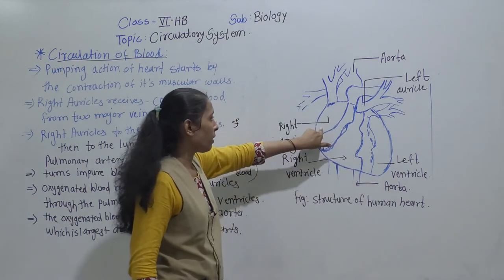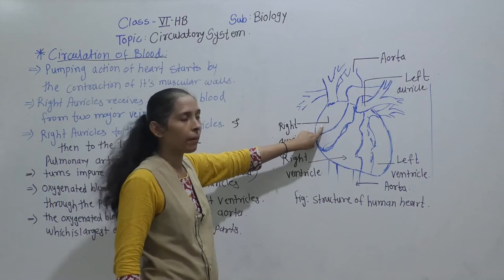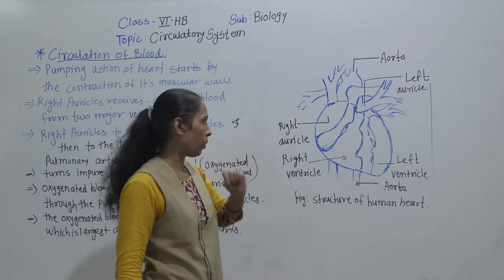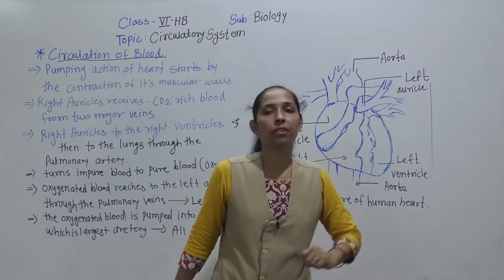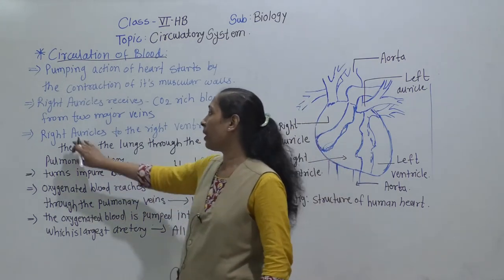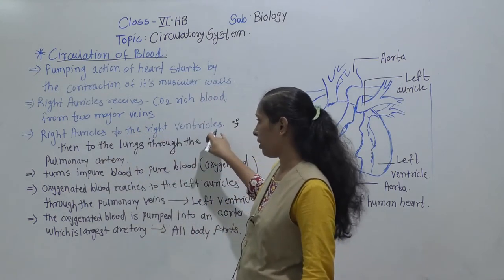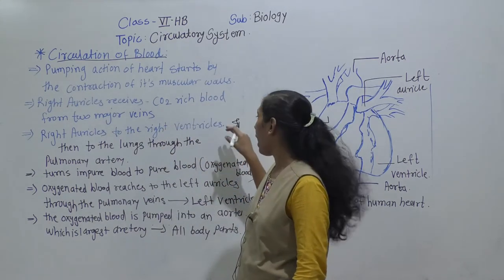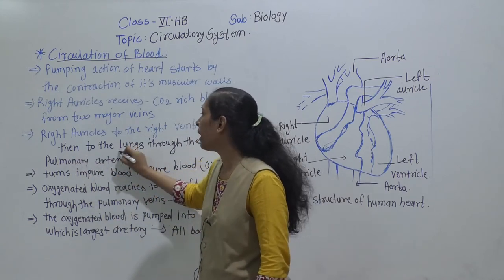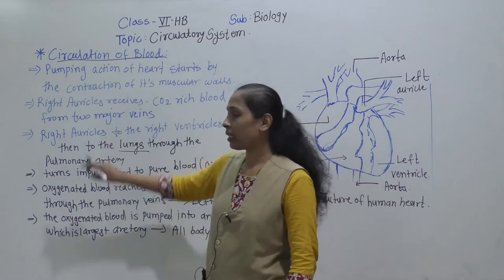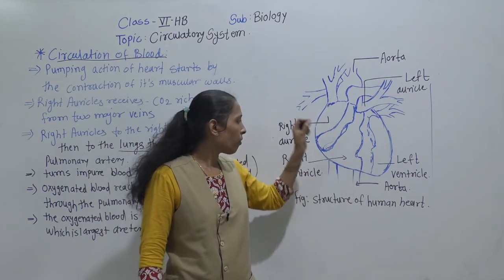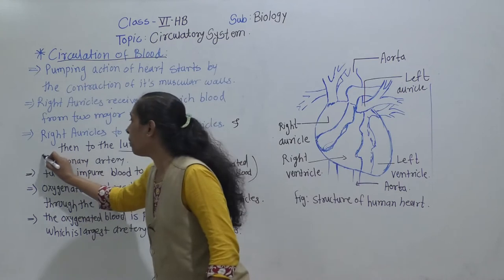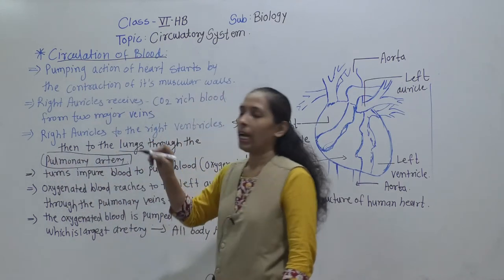So the CO2-rich, impure, deoxygenated blood comes into the right auricle. From the right auricle, the blood passes into the right ventricle, and from the right ventricle it is transported to the lungs with the help of the pulmonary artery.